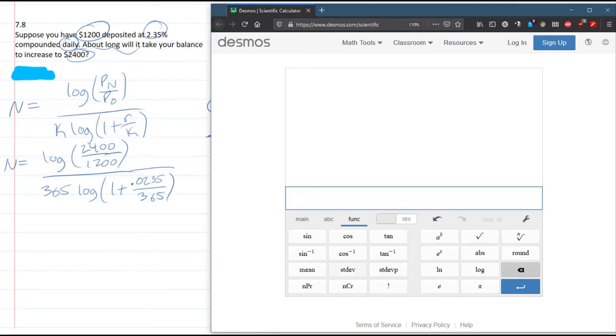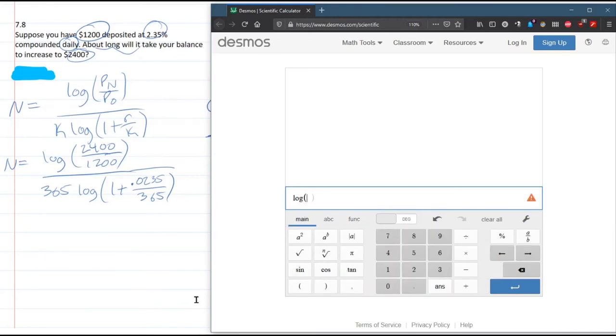I'm going to clear everything out. I went over to function to get to log, now back to main. It already gives you parentheses, so we do 2400 divided by 1200. Now I'm going to move the cursor with the mouse, close the parenthesis, and now we want to make a fraction, so we're going to do divided by. So there's our 365, times.